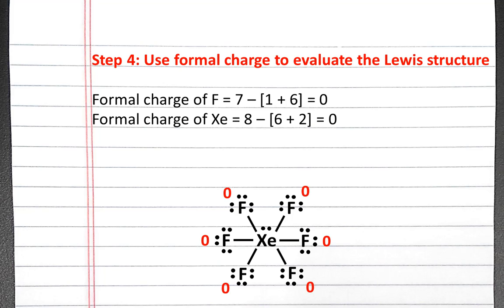For our xenon, xenon normally has eight valence electrons, subtract six bonds and two lone pair electrons, which equals zero.